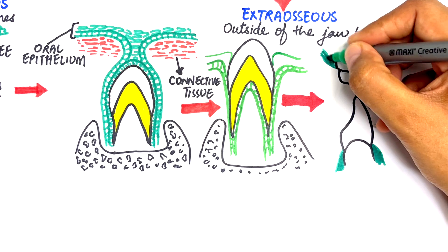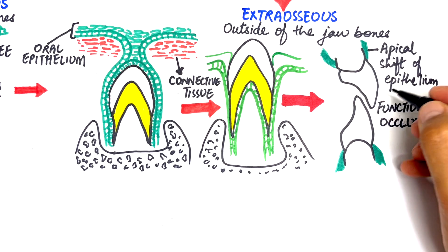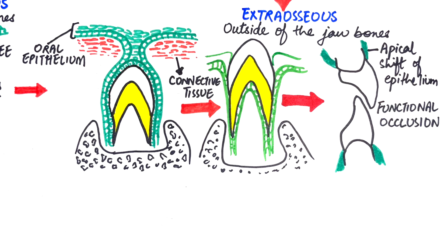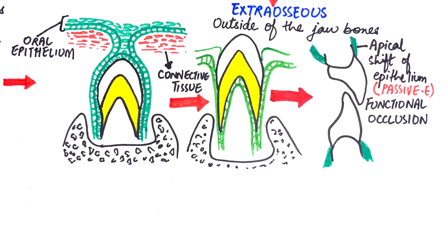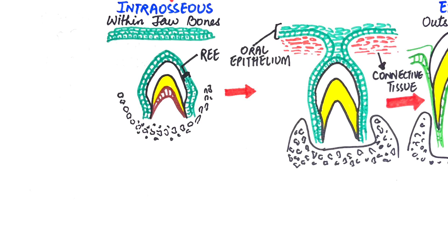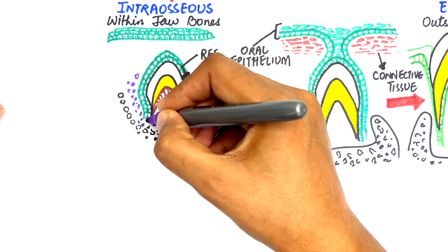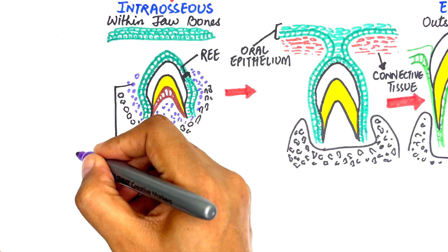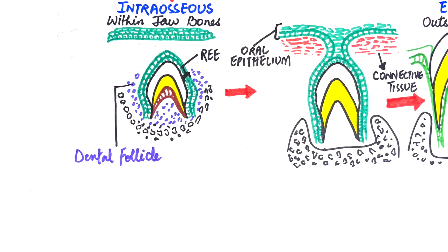The apical shift of the attachment or the junctional epithelium will then take place to expose the tooth crown fully, known as the passive eruption of the tooth. If we look into the molecular events briefly during the eruptive phase, teeth movements occur through a highly regulated process. A continuous signaling mechanism exists between the reduced enamel epithelium that covers the tooth crown and the dental follicular cells. A balance between bone resorption at the top of the tooth and bone deposition at its bottom, as the tooth moves away from the bone into the oral cavity, is maintained.